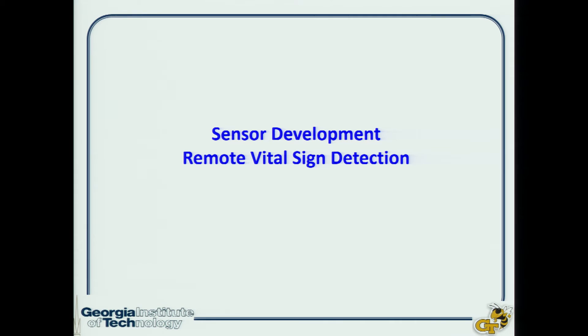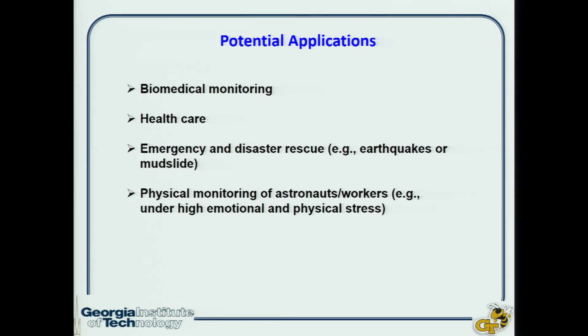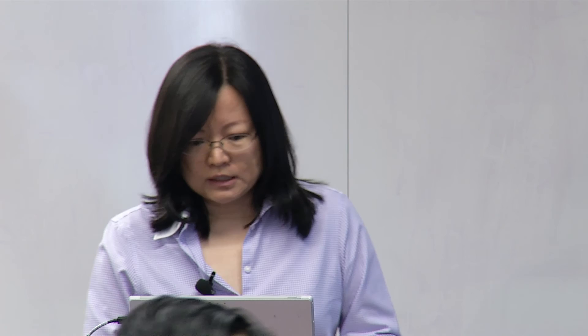The last topic I want to share is a remote vital sign detection system. This is a system we are developing to remotely detect human respiration rate and heartbeat rate. There are many potential applications, such as biomedical monitoring and healthcare. If we can make the system robust with long detection distance, it can also be used for emergency and disaster rescue, as well as physical monitoring of astronauts or other workers.